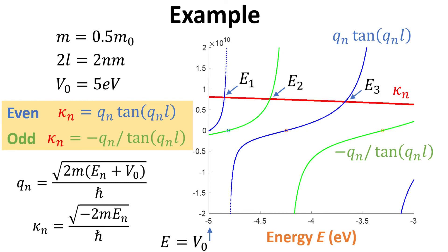The left side of the transcendental equation is just κn, which is given by the red curve. The right side of the transcendental equation is a function of qn. For the even case, it is plotted in blue. For the odd case, it is given in green. The solutions for the eigenenergies are given by the intersections of the blue and green curves with the red, as indicated by E1, E2 and E3.